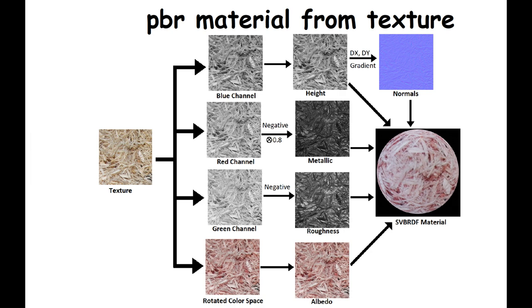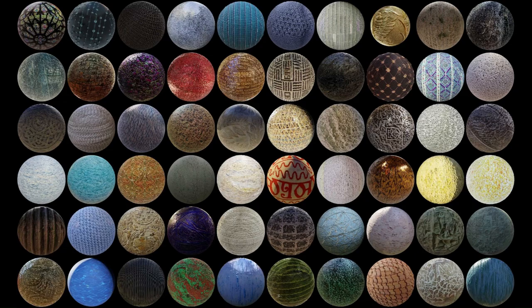Extracting PBR material maps from images requires guessing the physical properties of the material, and there is no straightforward way to achieve this. Once again, the assumption will be that the properties of the material, like reflectivity or roughness, are correlated in some cases with simple image properties, and for a common material and a large enough set of images, such correlation is bound to occur in some setting. Each material property map is generated by randomly choosing one of the image channels to represent this map. As seen in the image, this generates a vast range of highly diverse PBR materials.